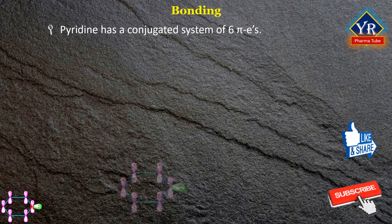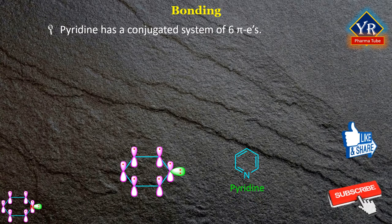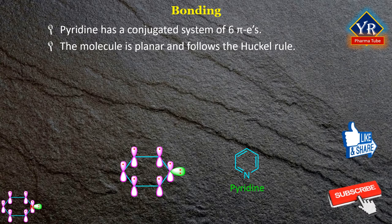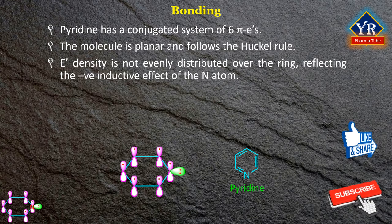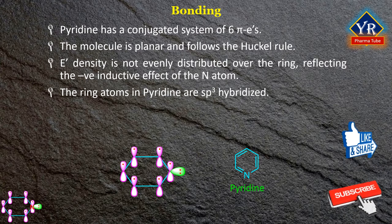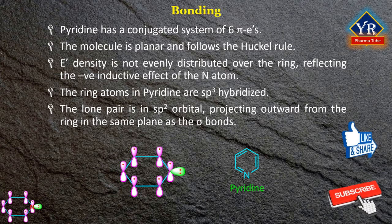Bonding of pyridine. Pyridine has a conjugated system of 6 pi electrons that are delocalized over the ring. The molecule is planar and thus follows the Hückel rule for aromatic systems. In contrast to benzene, the electron density is not evenly distributed over the ring, reflecting the negative inductive effect of the nitrogen atom. For this reason, pyridine has a dipole moment and weaker resonance stabilization than benzene. The ring atoms in the pyridine molecule are sp2 hybridized. The nitrogen is involved in the pi bonding aromatic system using its unhybridized p-orbital. The lone pair is in an sp2 orbital projecting outward from the ring in the same plane as the sigma bonds. As a result, the lone pair does not contribute to the aromatic system but importantly influences the chemical properties of pyridine, as it easily supports bond formation via an electrophilic attack.